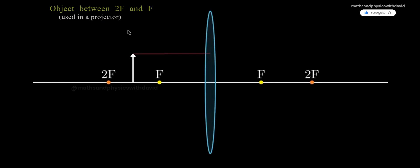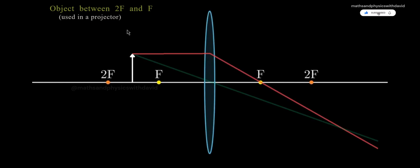Case 3, Object Between 2F and F. Draw the first ray parallel to the principal axis. After passing the lens, it goes through the focus. The second ray goes straight through the center of the lens, undeviated.